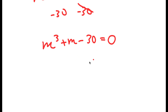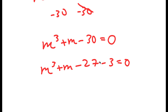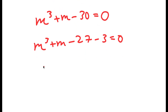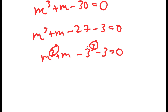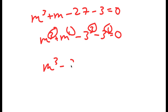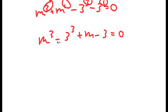Now I want to factor this, and the best way to factor this is to rewrite negative 30 as negative 27 minus 3. The reason I'm doing this is because negative 27 is the same thing as negative 3 to the power of 3. Notice how I have a power of 3 here, power of 3 here, and then a power of 1 here and a power of 1 here, so if I match these two this is what I end up with.